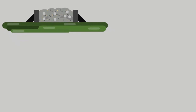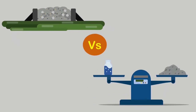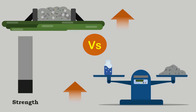In general, air voids in the concrete depend on the water cement ratio. There is an increase in the air voids with an increase in the weight of water. When this situation happens, the strength of the concrete drops down.